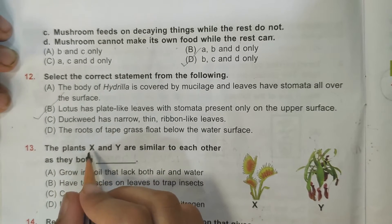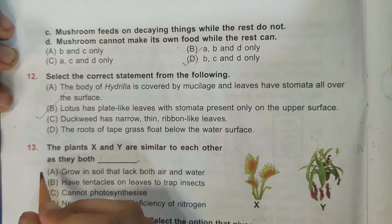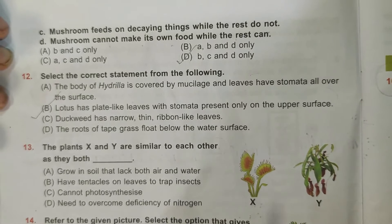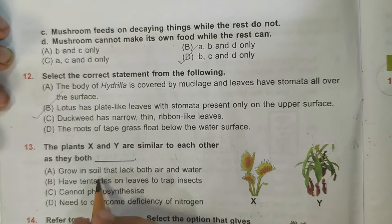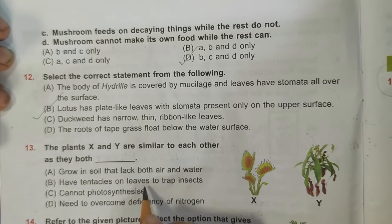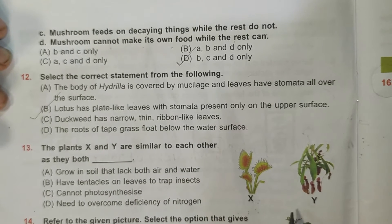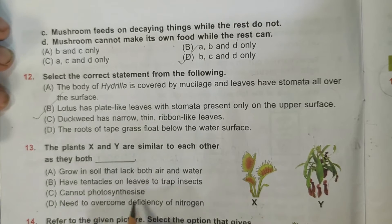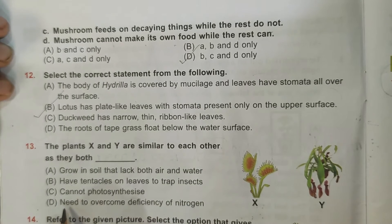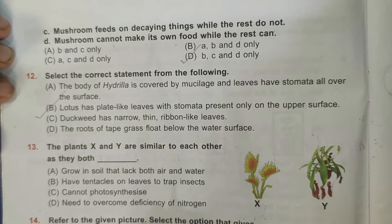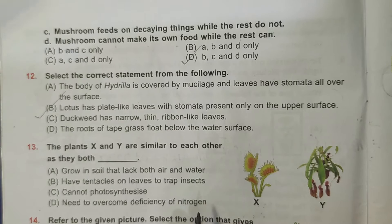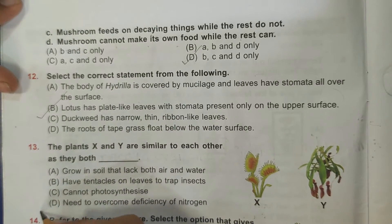Thirteenth question: the plants X and Y are similar to each other as they both dash. This is sundew and this is pitcher plant. Grow in soil that lacks both air and water - that is false. Have tentacles on leaves to trap insects - sundew has but pitcher plant does not, so that's also false. Cannot photosynthesize - that's also false because they both can photosynthesize. Need to overcome deficiency of nitrogen - that's true because that's why they trap insects, to fulfill their nitrogen need. So D is the correct answer.